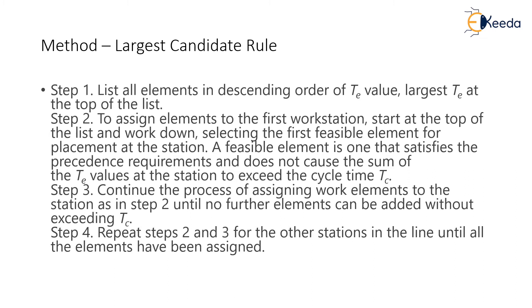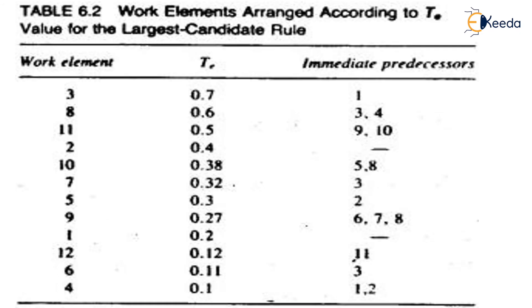In step 3, we continue assigning work elements to the station as in step 2 until no further elements can be added without exceeding Tc. Finally, we repeat steps 2 and 3 for the other stations in the line until all elements have been assigned.